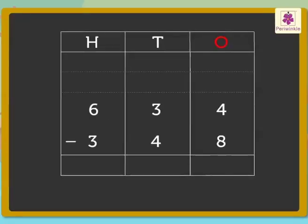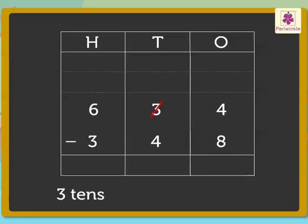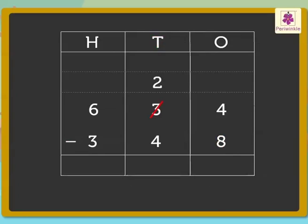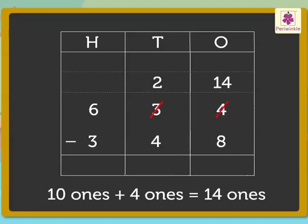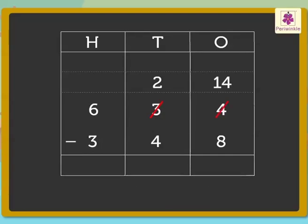Subtract the ones, that is 4 minus 8. As 4 is smaller than 8, we regroup 3 tens as 2 tens plus 10 ones. Now we have 10 plus 4 is equal to 14 ones. Therefore, 14 minus 8 is equal to 6 ones.